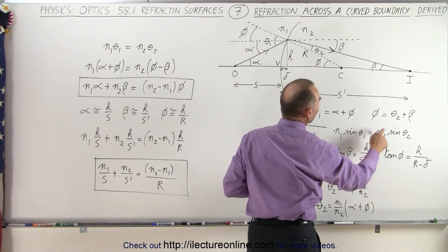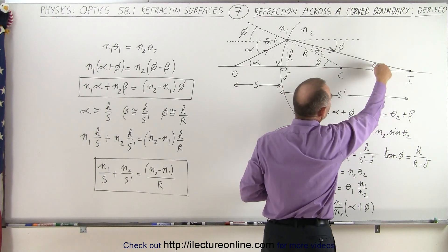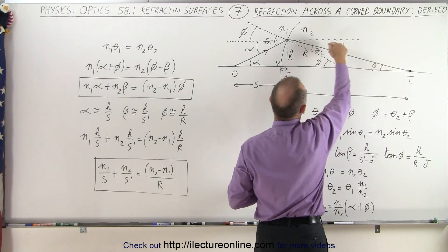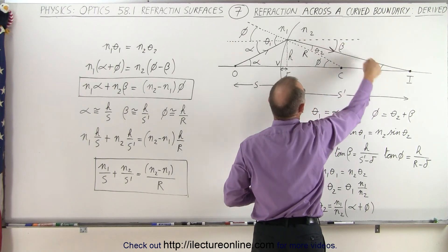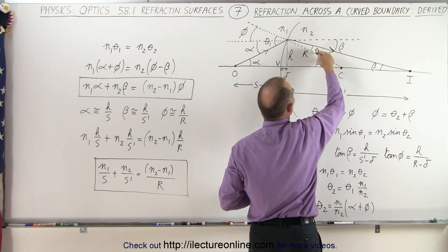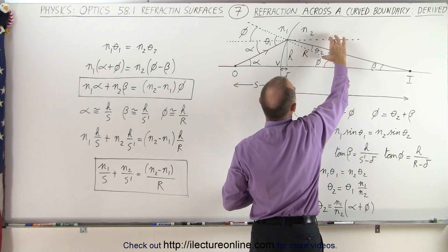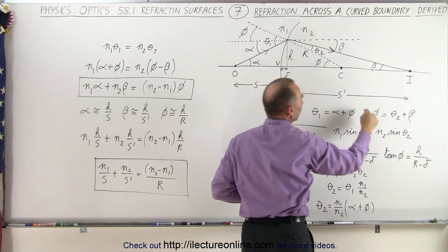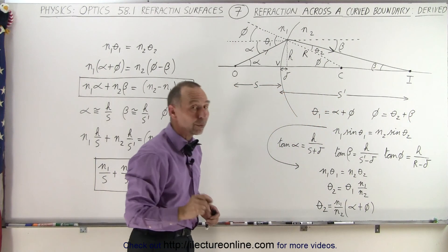We can also write theta sub 2 in terms of phi and beta. Beta is the angle on the image side, and those alternate interior angles confirm that theta sub 2 plus beta equals phi — as shown in the equation.